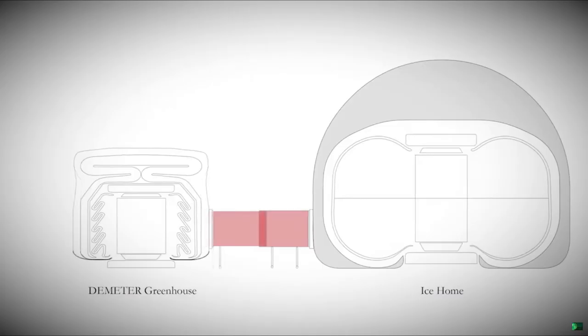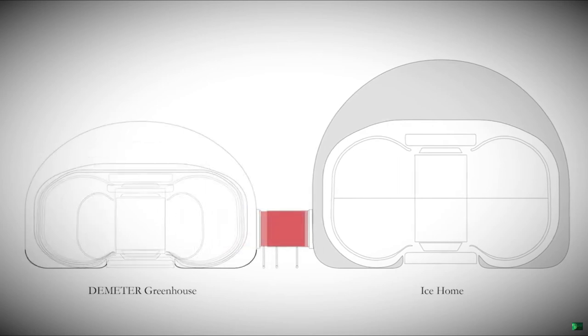Once the package has landed on the Martian surface and been placed in its final position, a telescoping airlock tunnel will be connected from the ice home to the greenhouse. As the greenhouse inflates, the tunnel will telescope back into a closed position.